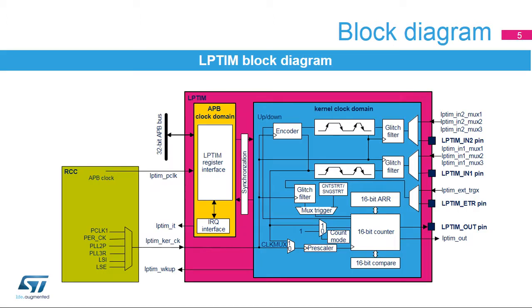The low-power timer is a peripheral with two clock domains. The APB clock domain contains the peripheral's APB interface. The kernel clock domain contains the low-power timer peripheral's core functions, and can be clocked by internal clock sources or from an external clock source through the timer's LP-TIM-IN1 input.